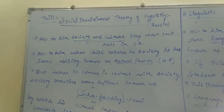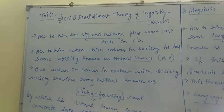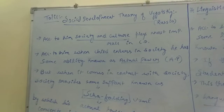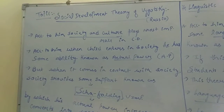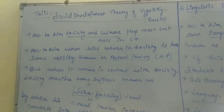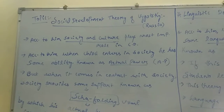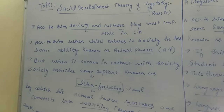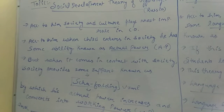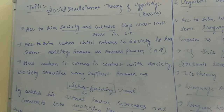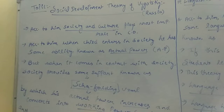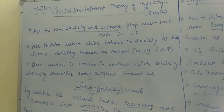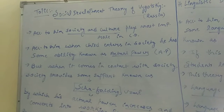The most important thing in Vygotsky's theory is society and culture in child development. Society and culture are central. Children are born with certain powers — we call them actual powers. When a child is born, all the senses are available, everything is available, but they have not been taught yet.